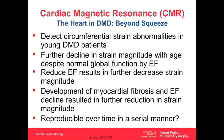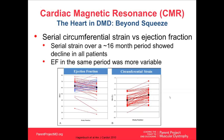Using this tool, we detected circumferential strain abnormalities early in young DMD patients. Further decline in strain magnitude was seen with age despite normal global heart function by ejection fraction. Reduced EF resulted in further strain decline, and when scar formation is also present, there is even further reduction. We then looked at 50 boys approximately 16 months apart: strain magnitude got lower in all patients over the study period, whereas ejection fraction went up or down variably despite no medication changes — confirming EF is more variable and less sensitive than myocardial strain.